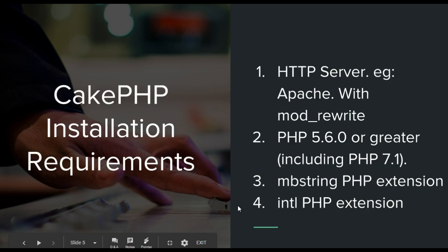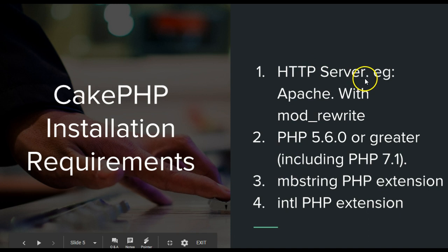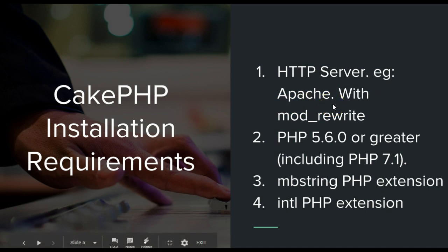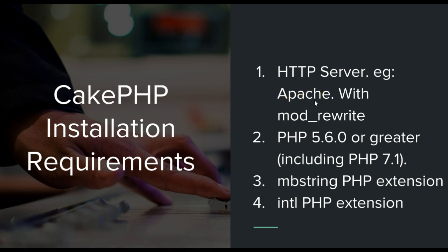To kick off, we need to install CakePHP and here are the installation requirements. First of all we need an HTTP server — a good example is the Apache server. What we will do is install WAMP server. WAMP stands for Windows, Apache, MySQL, and PHP — it's a combination of all the things you need in your server to run your application.